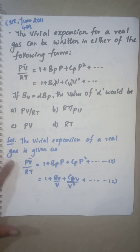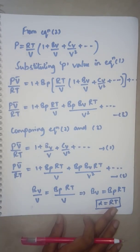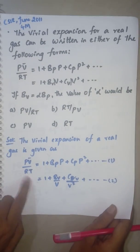You have to find out what is that alpha value which is relating BP and BV. The Virial expansion of a real gas is given, so this is a given condition.